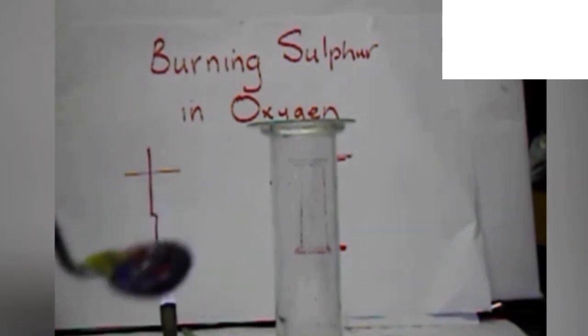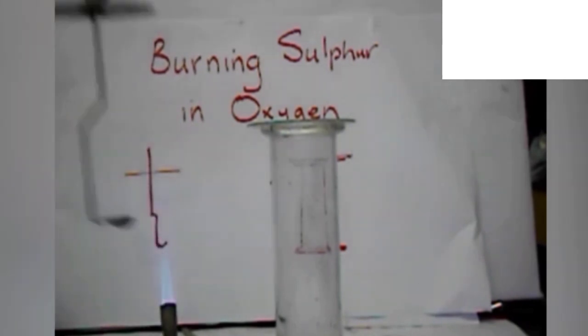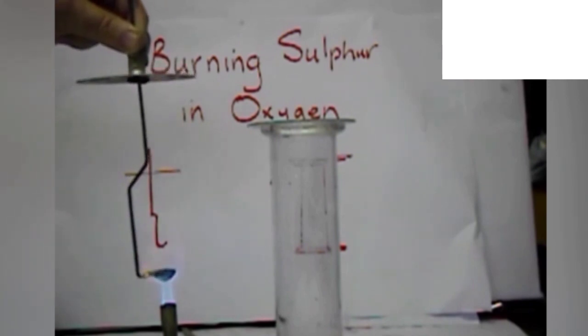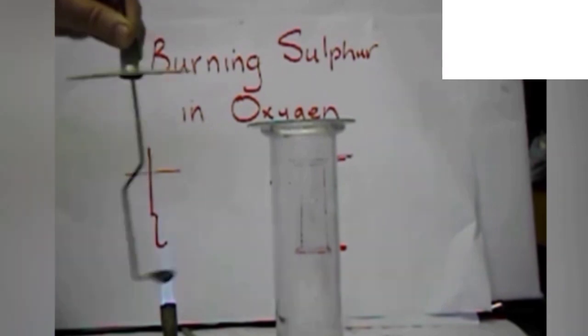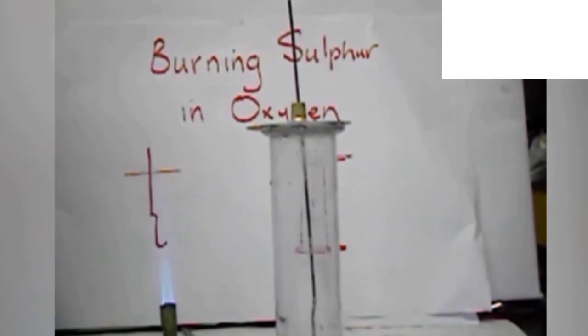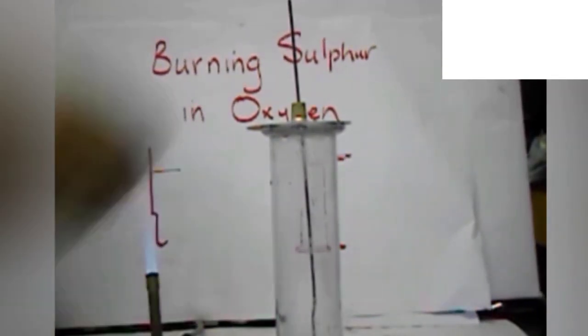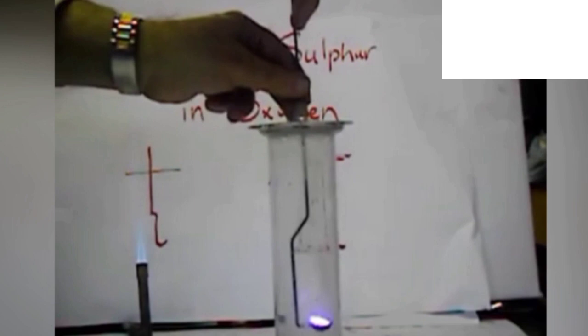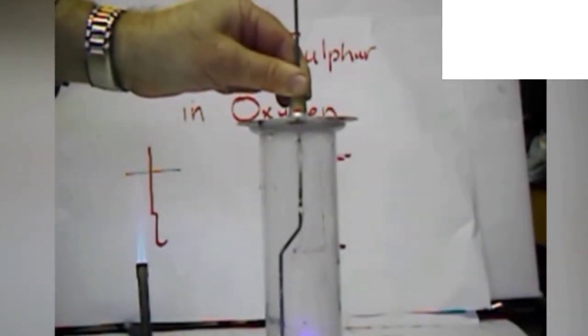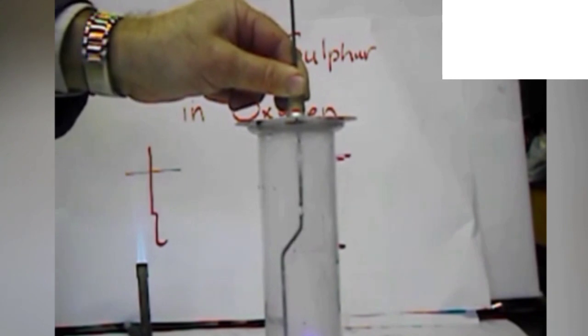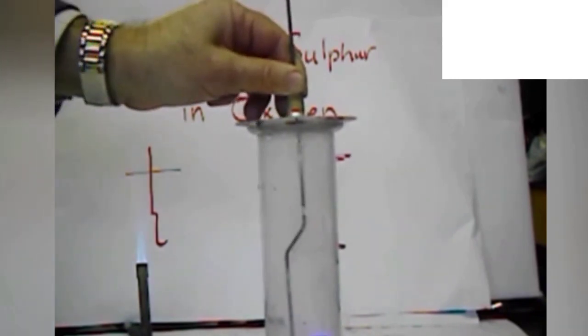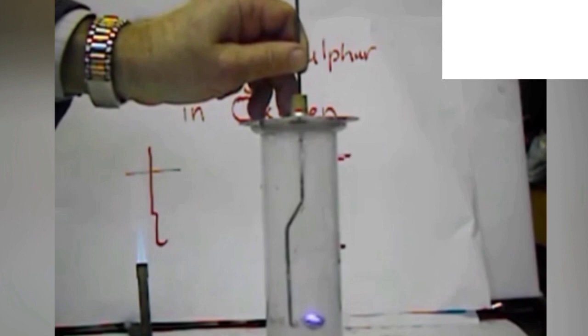When it starts catching fire, carefully, let us introduce this burning spatula into the glass jar which is filled with pure oxygen. You can see a beautiful blue colored flame in the jar. Sulfur is burning in presence of oxygen. A colorless gas is evolved which is called sulfur dioxide, poisonous gas.